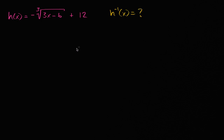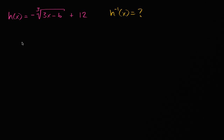Pause the video and see if you can figure it out. In previous videos, we've emphasized that what an inverse does is a function will map from a domain to a range, and you could think of the inverse as mapping back from that point in the range to where you started from. So one way to think about it is we want to come up with an expression that unwinds whatever this does.